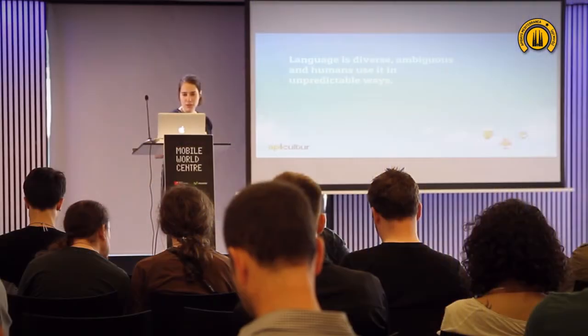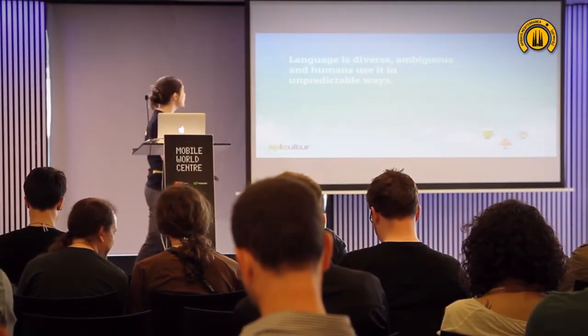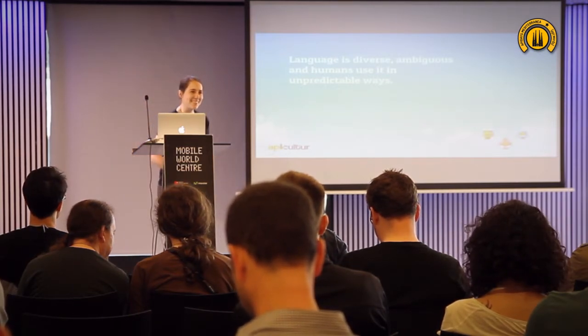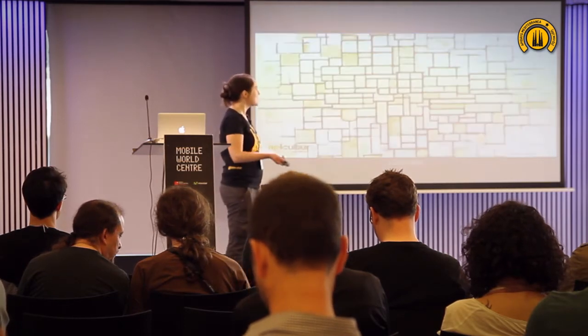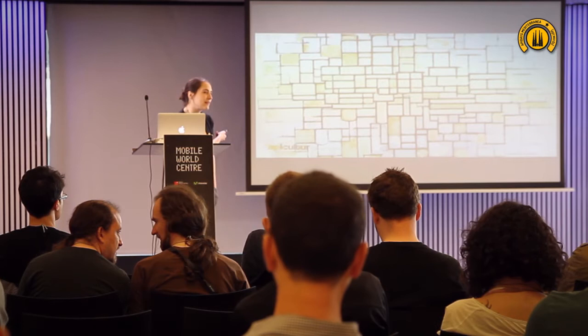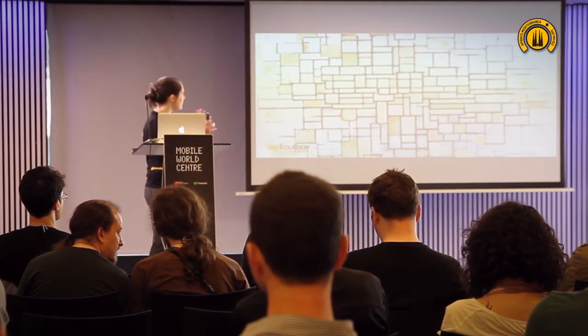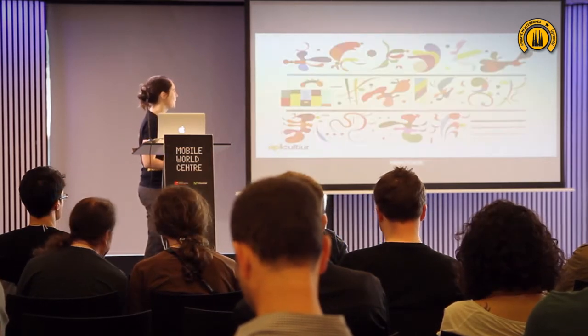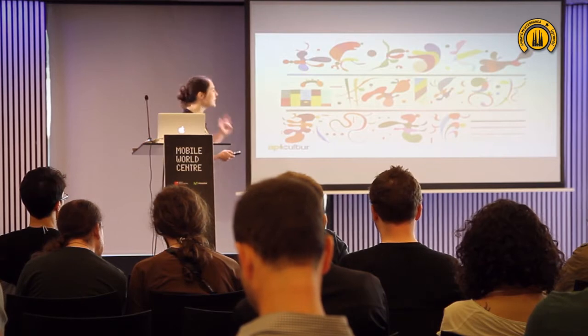The thing about language is that it's diverse, it's ambiguous, and we humans use it in unpredictable ways. Sometimes I feel this is the way we like language to be — very regular and with a very clear structure. But to me, language looks a little bit more like this painting by Kandinsky. I'm not sure if he had language in mind when he painted it, but for me it's a great metaphor of how language works. It's poetic, it's symbolic, it's ambiguous, and it's enormously creative — something we all use in very creative ways.